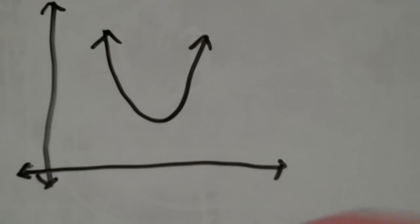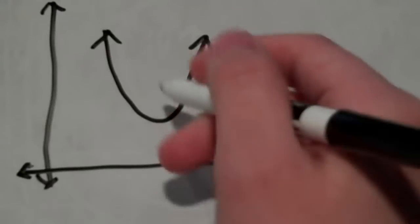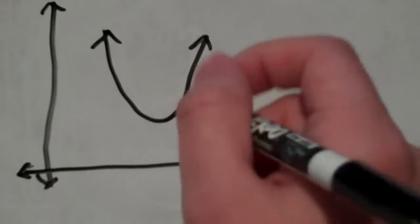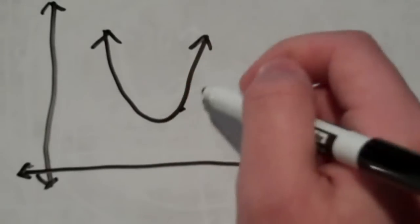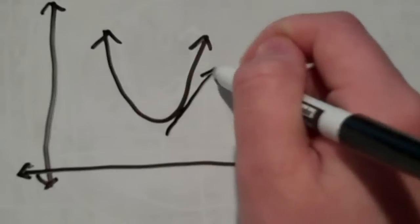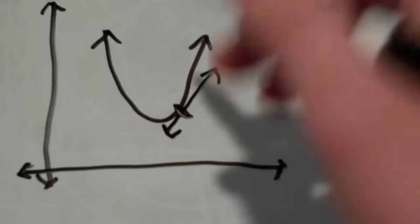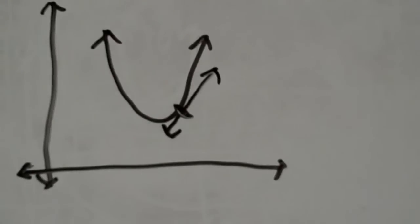Now, the tangent line is the line that intersects the curve at exactly one point. We'll say this point here. It intersects it at exactly one point. Not two, not three, not zero, one. So that is what the tangent line is.